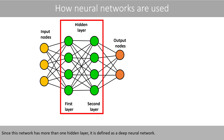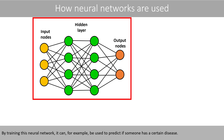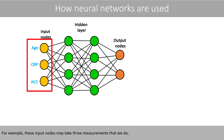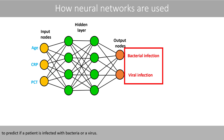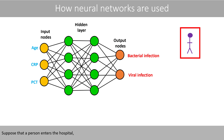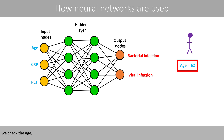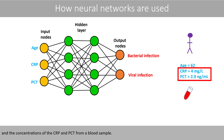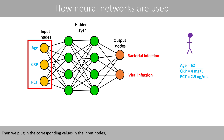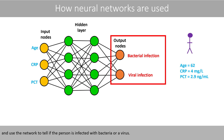Since this network has more than one hidden layer, it is defined as a deep neural network. By training this neural network, it can, for example, be used to predict if someone has a certain disease. For example, these input nodes may take three measurements to predict if a patient is infected with bacteria or a virus. We check the age and the concentrations of CRP and PCT from a blood sample, then plug in the corresponding values into the input nodes.